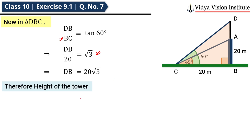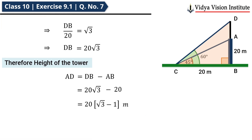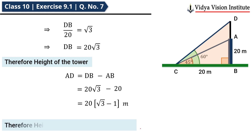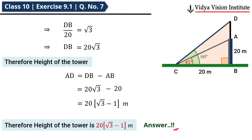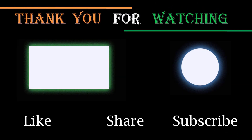Therefore height of the tower, that is AD, AD is equal to DB minus AB। DB की value है 20 root 3 meter and AB की value है 20 meter। यहाँ पर 20 common ले सकते हैं — यह हो जाएगा 20 bracket में root 3 minus 1 meter। Therefore height of the tower is 20(√3 − 1) meter, and that is our answer।